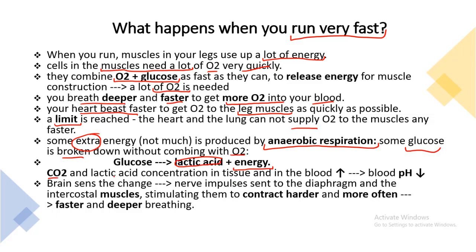Carbon dioxide and lactic acid concentration in the tissues and in the blood becomes high. As you know, acid has a low pH, so the blood pH begins to fall, and this is quite dangerous. Your brain senses the change in pH and it sends nerve impulses to the diaphragm and the intercostal muscles.